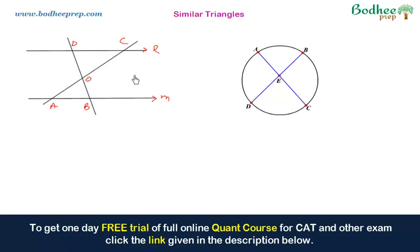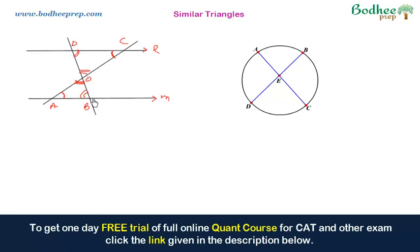This is easy to prove because these are two parallel lines, so AC and BD act as transversals. Looking at AC, this angle equals this angle because they are alternate interior angles. Similarly, taking DB as the transversal, this angle equals this angle by the same logic of alternate interior angles. Angle O is equal because they are vertically opposite angles. So all three corresponding angles are equal, confirming triangle AOB is similar to triangle COD.